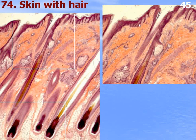The four layers of thin skin epidermis are: stratum basalis, stratum spinosum, stratum granulosum, and a very thin stratum corneum. There is no stratum lucidum in thin skin.